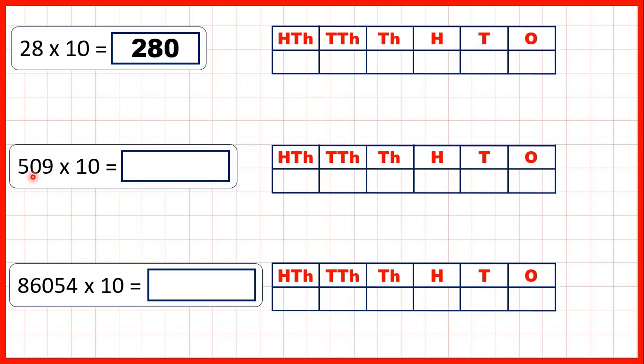So now we have 509 times 10. That's 5090 because we can just write a zero on the end of our number to multiply it by 10.